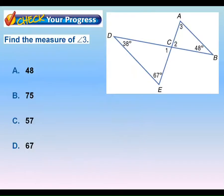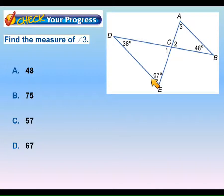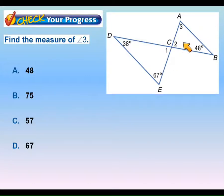Very similar one here — we don't necessarily need to go through it all because it's the same process. Angle 1 equals 180 minus those two angles added together — those two would be 105, so angle 1 would be 75. Angle 2 would also be 75. And angle 3 would be whatever is left over when you add those together.